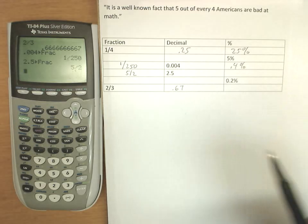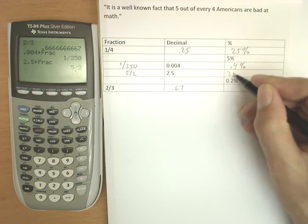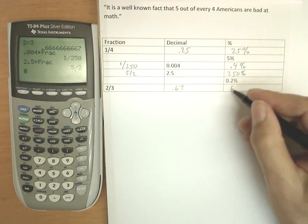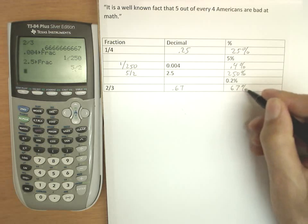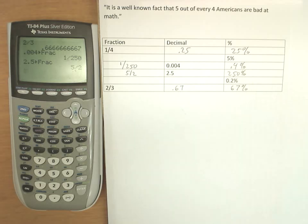0.004 will be 0.4%. It's not a whole percent, it's less than 1%. 2.5, moving the decimal two spots to the right, is 250%. And 0.67 would be 67%. Or if we needed more accuracy from the original two-thirds, it would be 66.6 to however many spots we needed, and finally rounding it to a 7 as a percent.